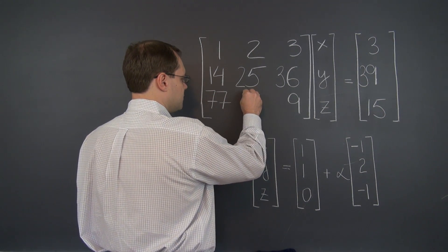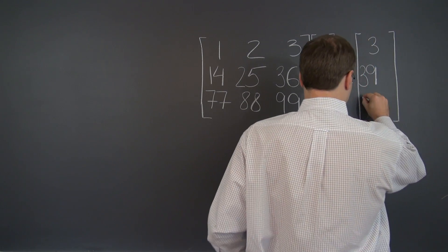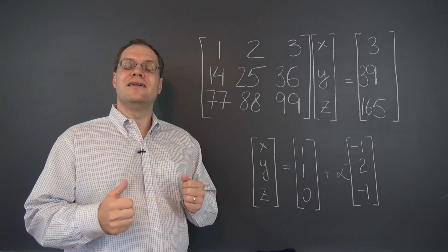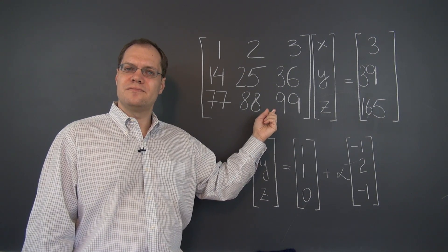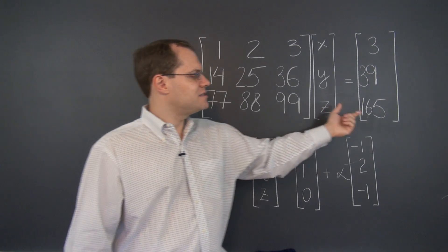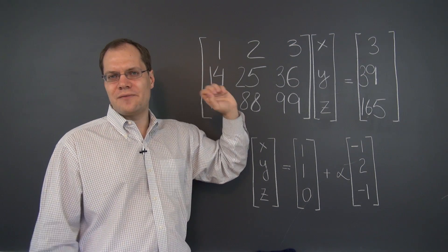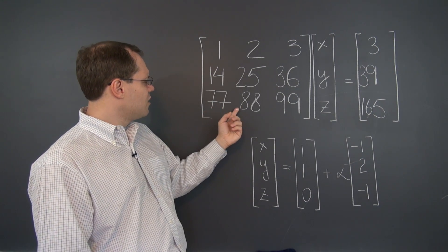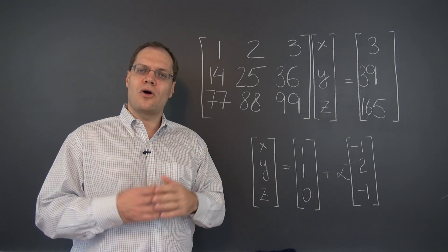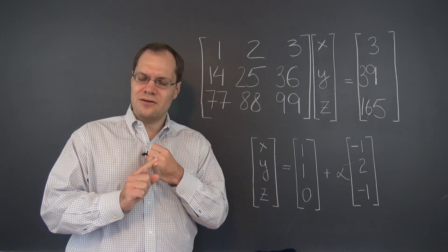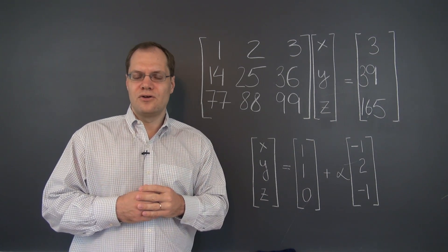Doing so leaves us with 77, 88, 99, and 165 on the right-hand side. Now let's see if the relationships among the columns are preserved. Is the middle column still the average of the other two? Yes, of course it is. And is the vector on the right-hand side still the sum of the first two columns? In the first two entries it's obvious because those remain unchanged, and in the last entry we have 150 plus 15, which is 165. So those relationships — in fact all of the relationships — are once again preserved. So multiplying a row by a number also preserves all of the relationships among the columns.